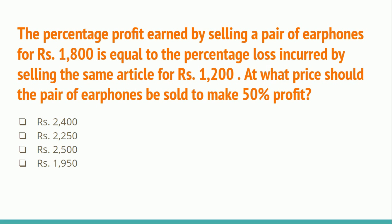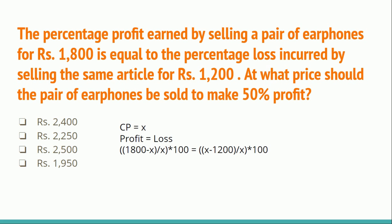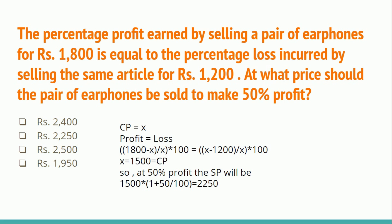First, we need to find the cost price. Let the cost price be X. Since profit percentage equals loss percentage, we set up the equation: (1800 − X)/X = (X − 1200)/X, which gives X = 1500. Now, using the selling price formula — Cost Price × (1 + Gain%/100) = Selling Price — with cost price 1500 and gain 50%, the selling price = 1500 × 1.5 = ₹2250. The correct answer is ₹2250.